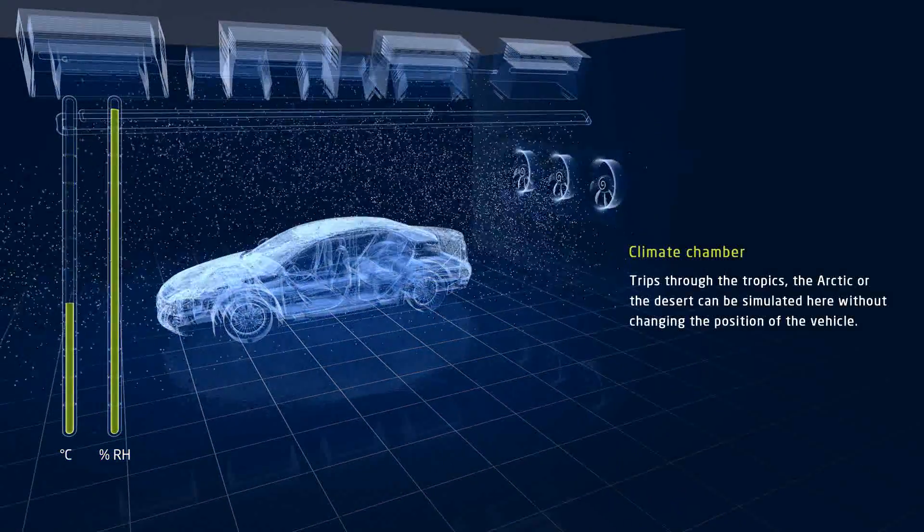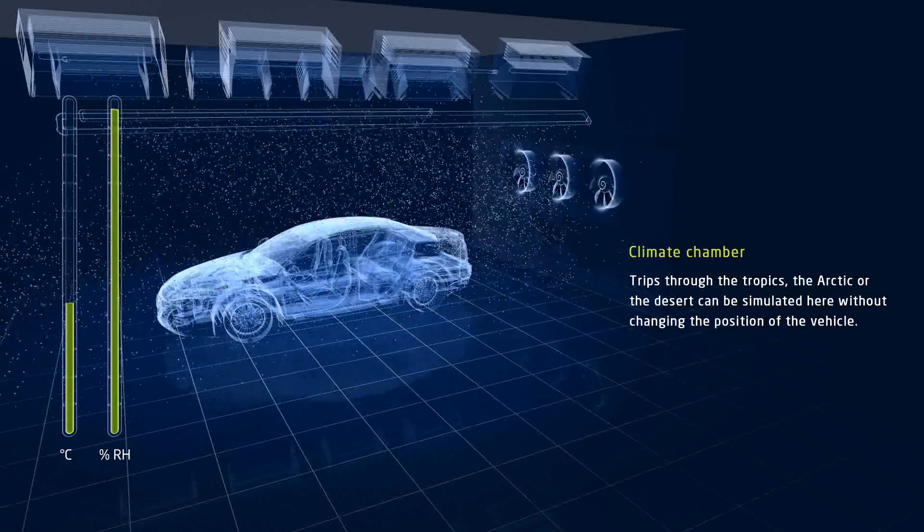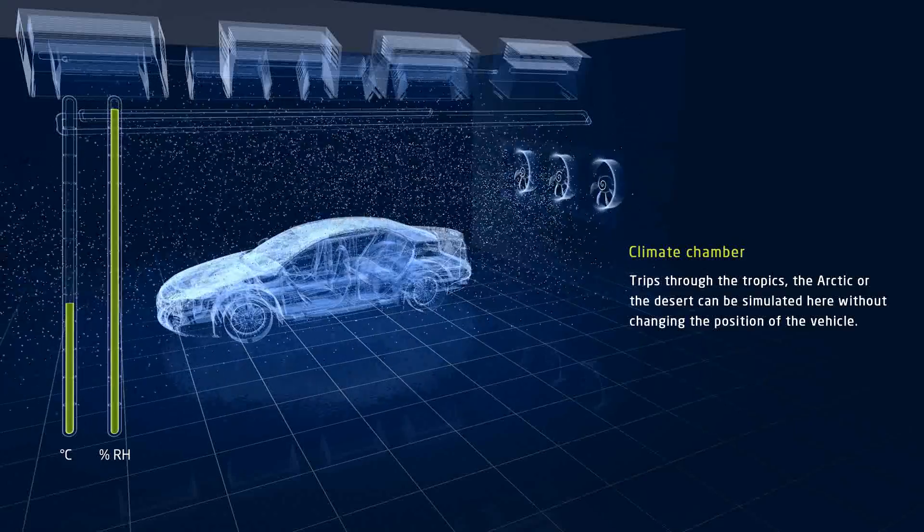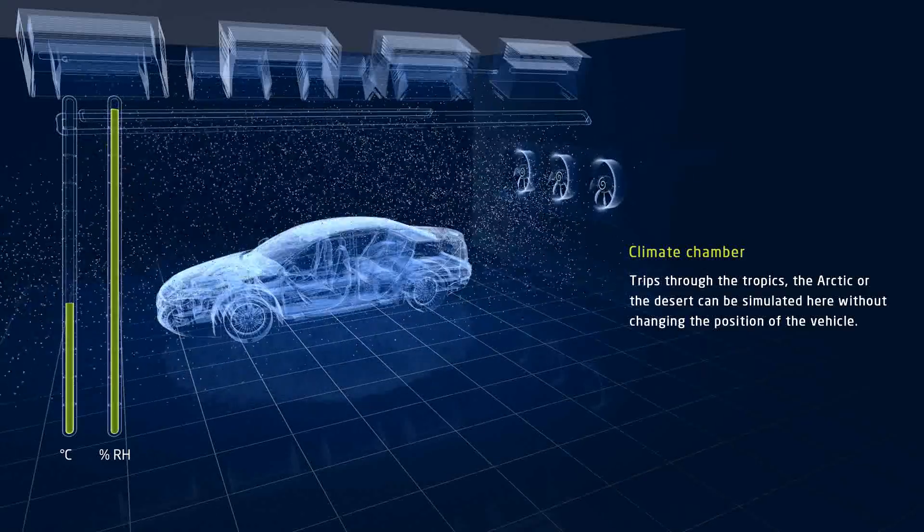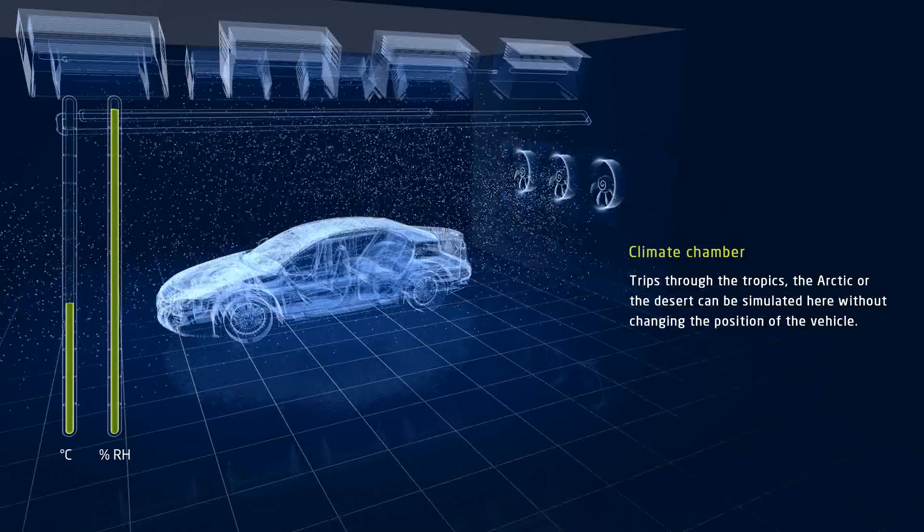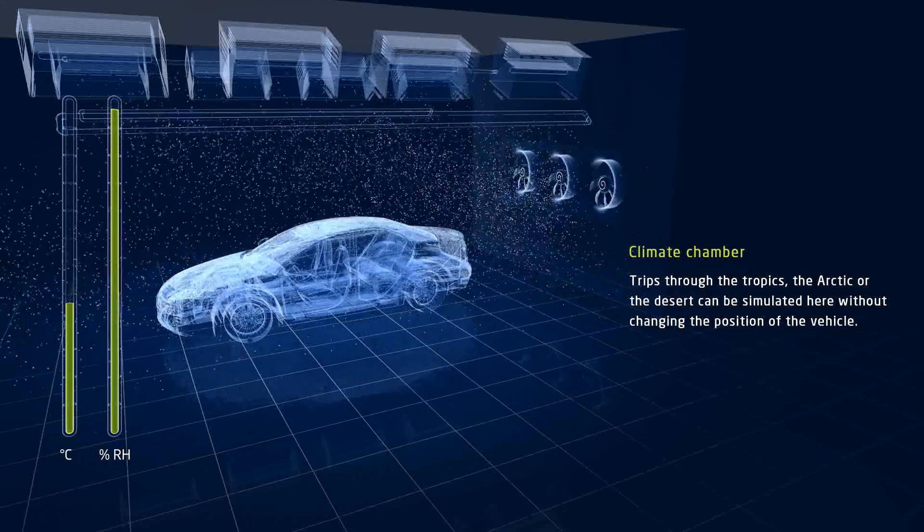From the tropics to the Arctic to the desert, in Shunk climate chambers, trips in a wide variety of conditions can be simulated, also in connection with typical vibrations that occur while driving. All of this is possible without even changing the position of the car. That saves time and money and always provides reproducible results.